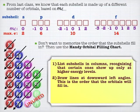What you keep doing is you keep bringing out subshells until you have enough subshells to hold the number of electrons in question. Now technically every atom has every subshell, but we're only going to show the subshells that get used every time.